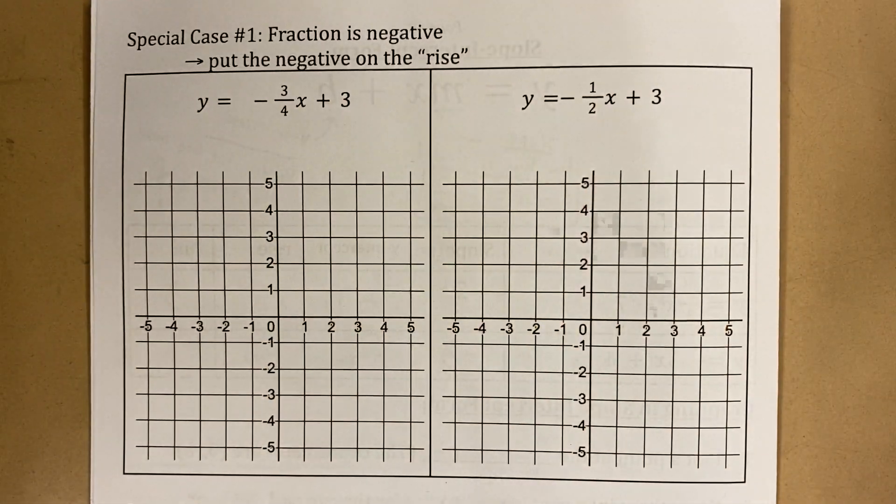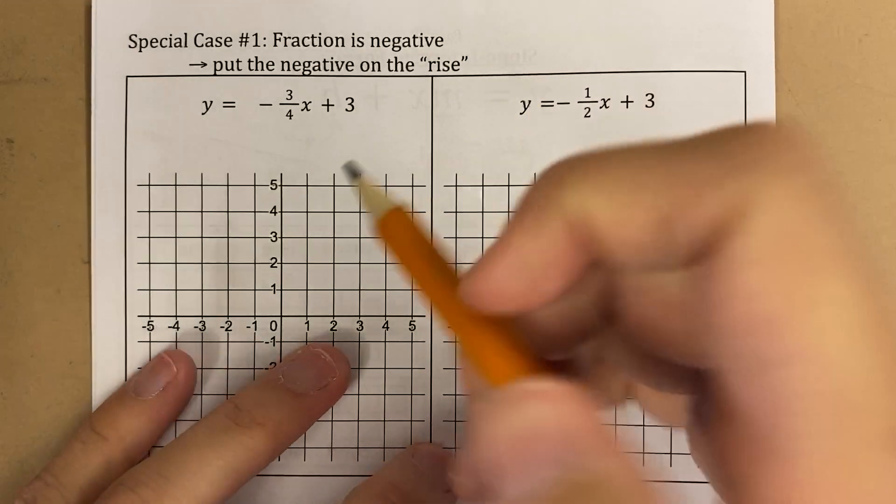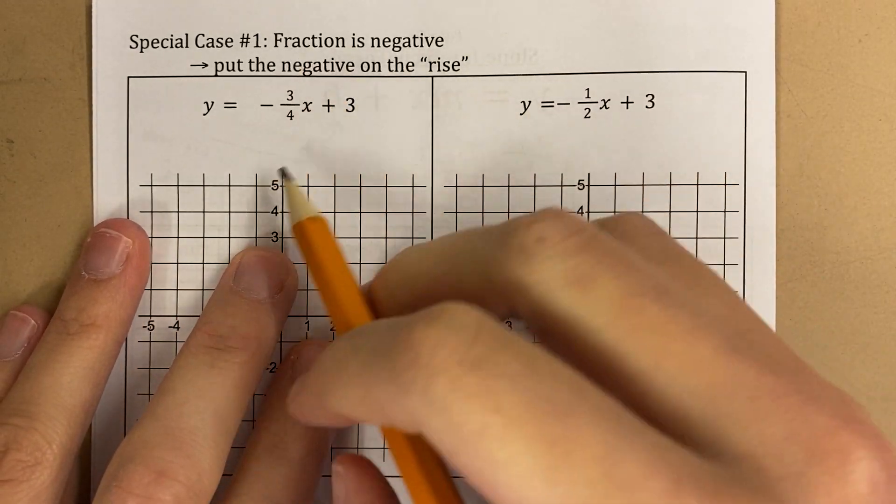There's all kinds of special situations that we run into when we're graphing lines. So here's the first one. What if the fraction is negative? What if it looks like this?